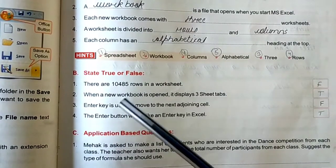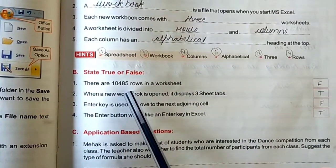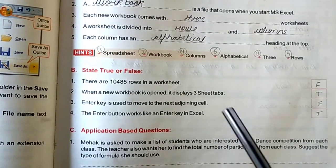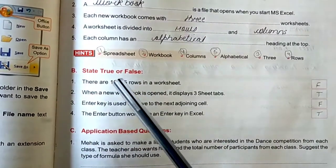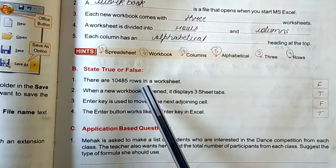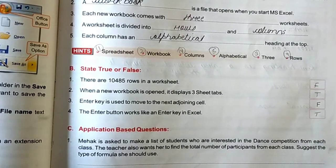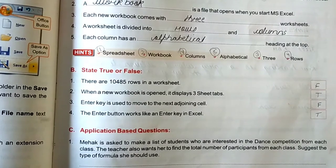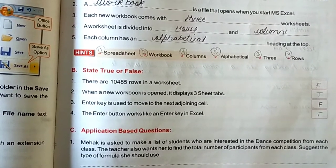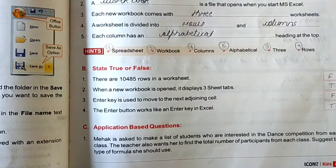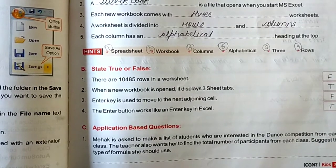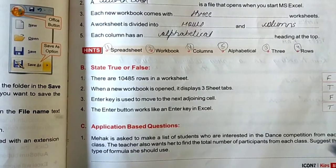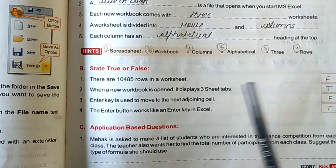Now, state true or false. First, there are 1,485 rows in a worksheet. In your worksheet, there are 1,485 rows available. No. That is false. How many rows have in your worksheet? 1,048,576 rows available in your worksheet. So, that is false.